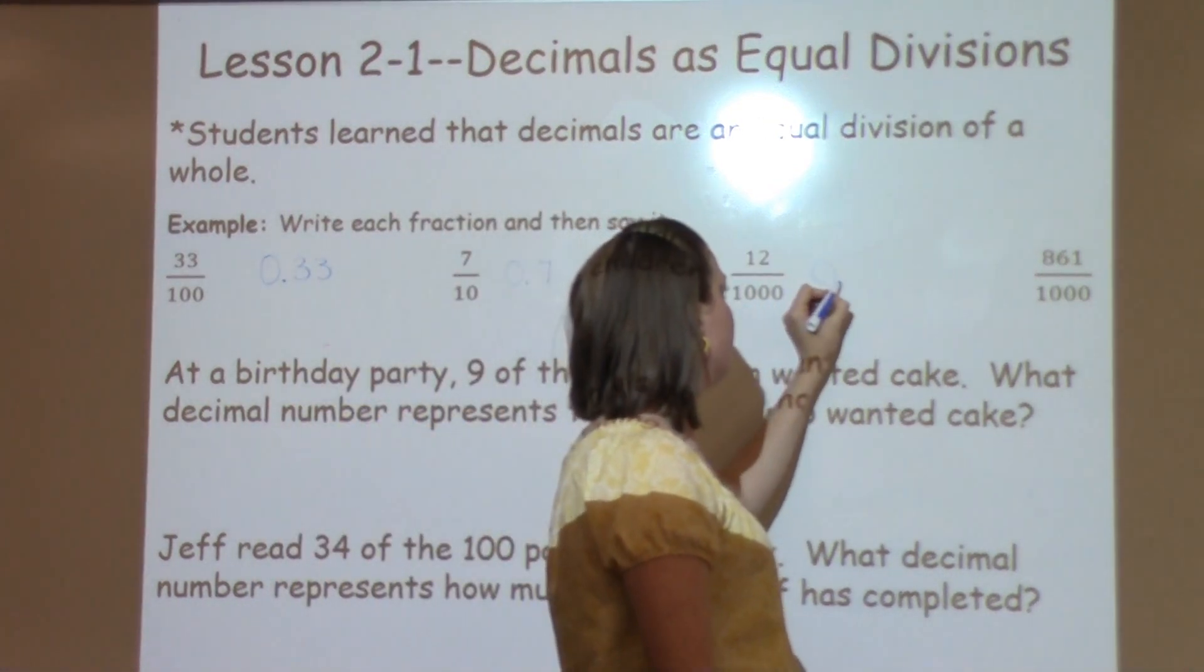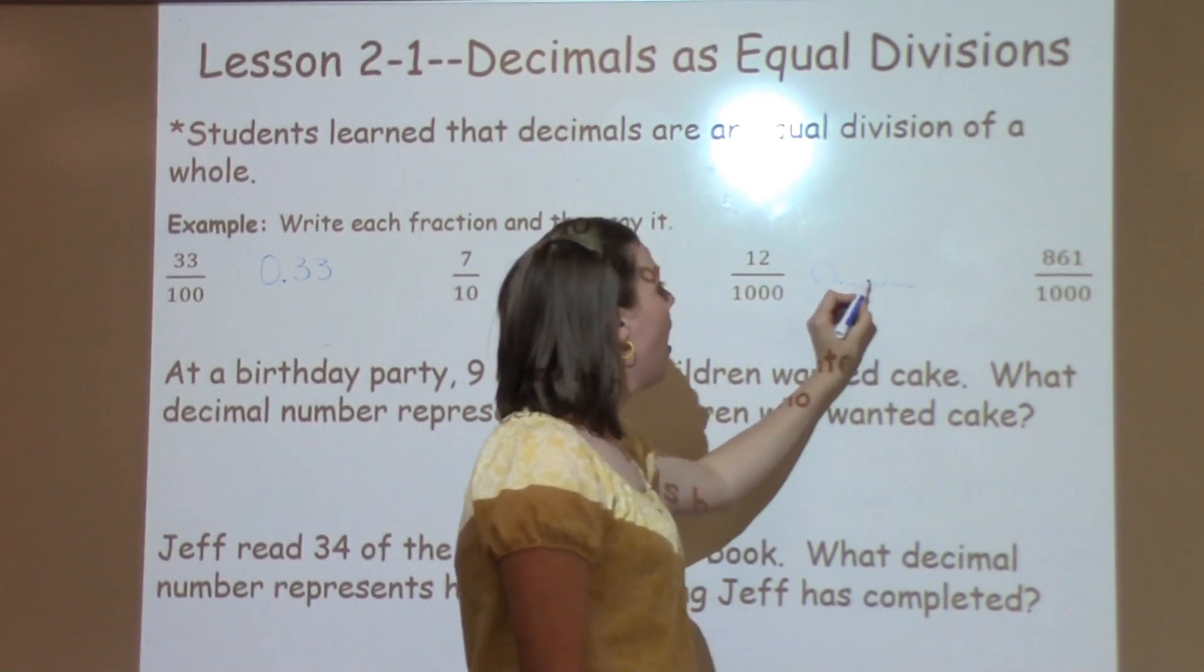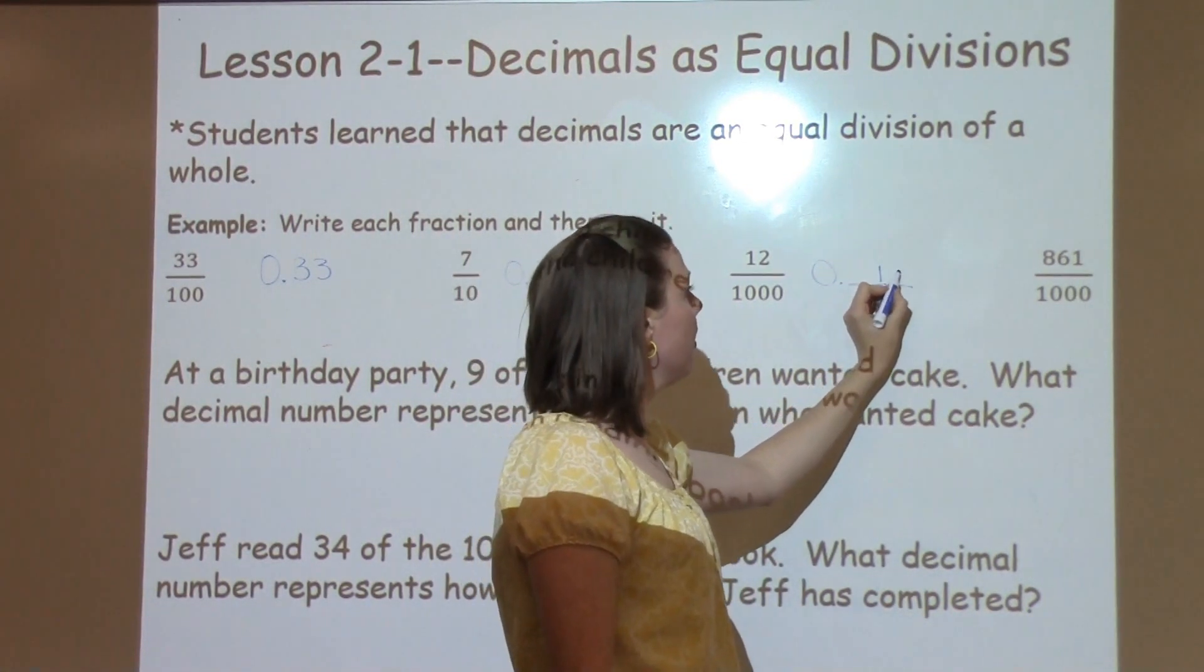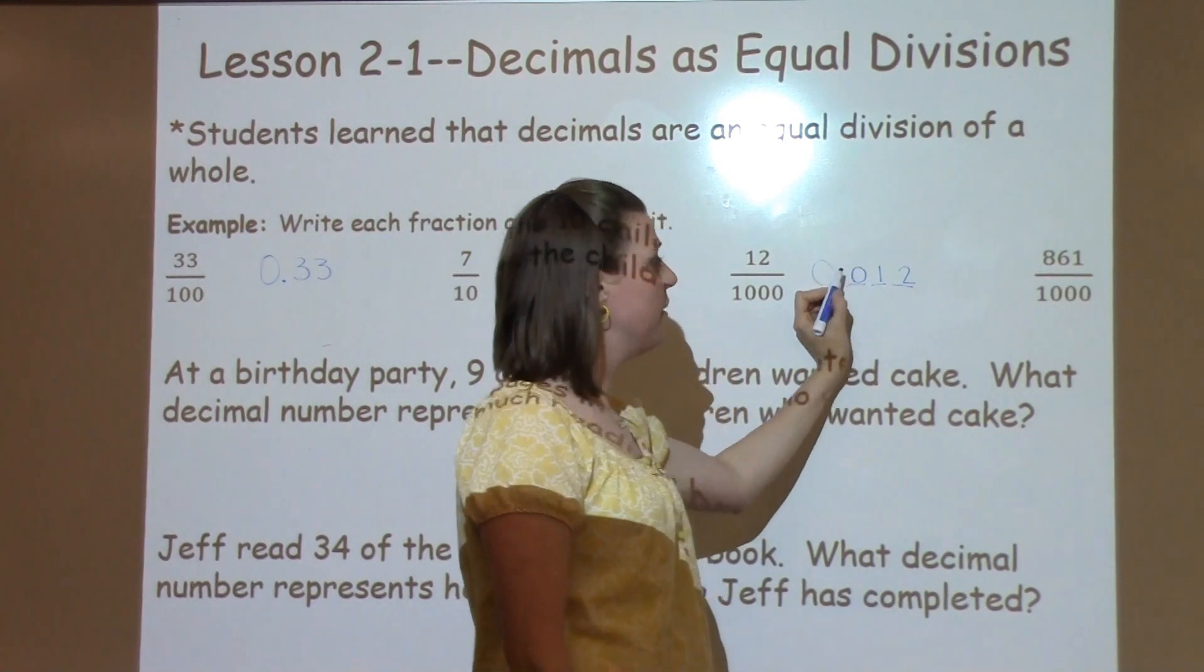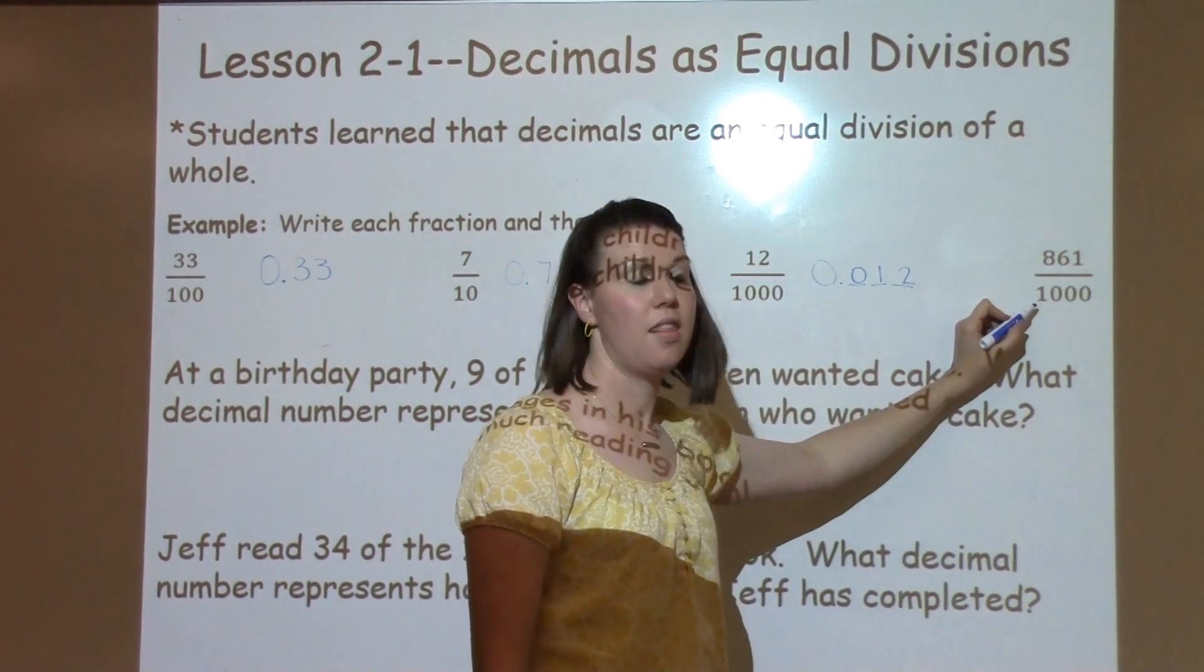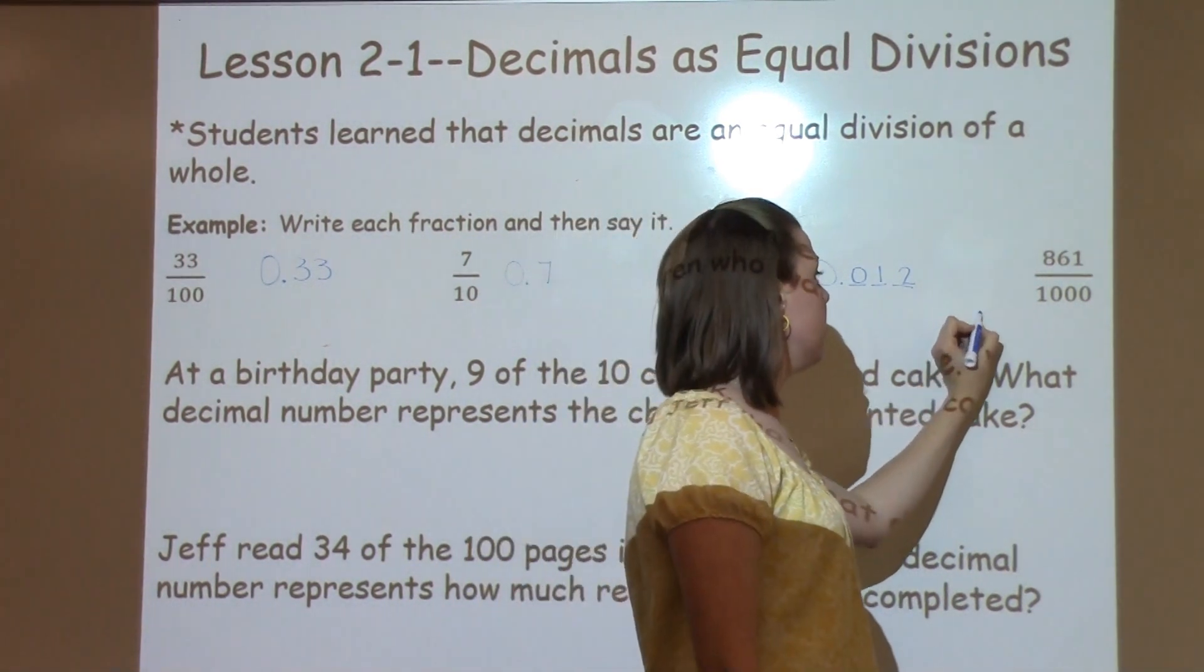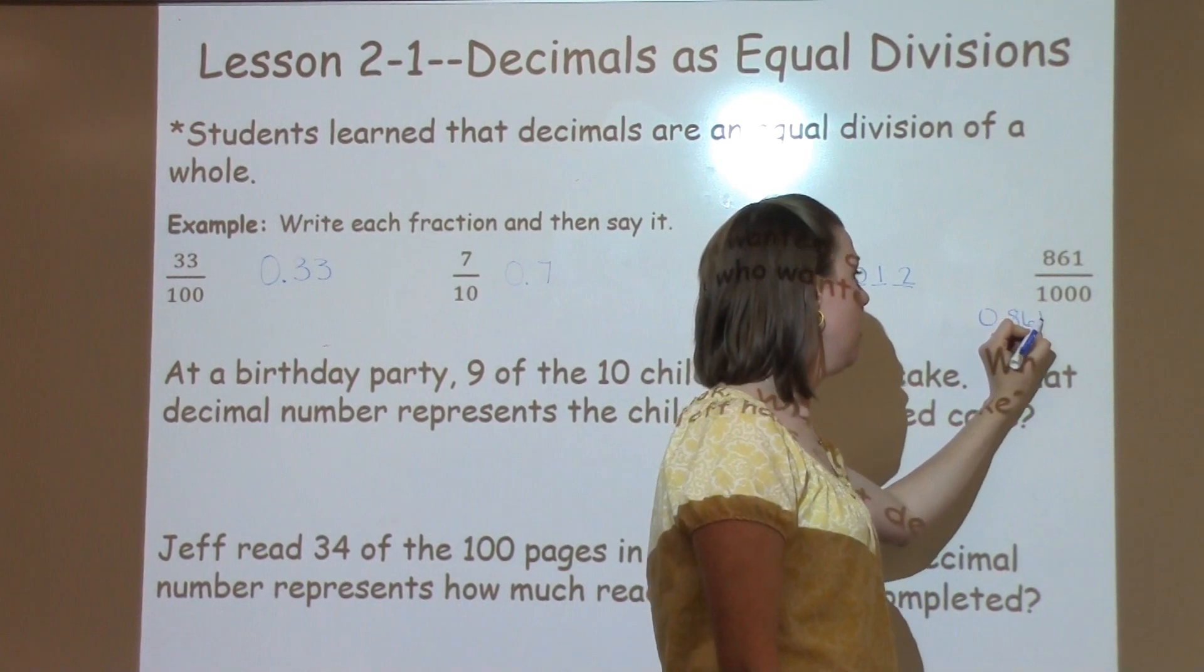I'm going to write my 0 and my 3 spots for my thousands. I'm going to write my 12 in my thousandth spot, and then I put a 0 here for my placeholder. My final one I have is 861 thousandths. So I'm going to write 0 and 861 thousandths.